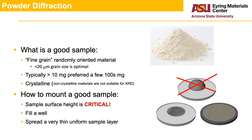First, we make a good sample. The best samples for powder diffraction have the consistency of talc powder, with a fine grain size and grain shapes limiting preferred orientation. The sample quantity should be in the hundreds of milligrams if possible, but when needed, very small amounts such as 10 to 20 milligrams can still provide excellent data.